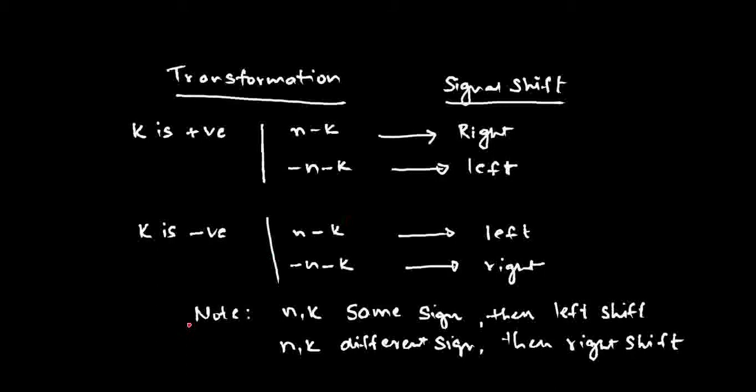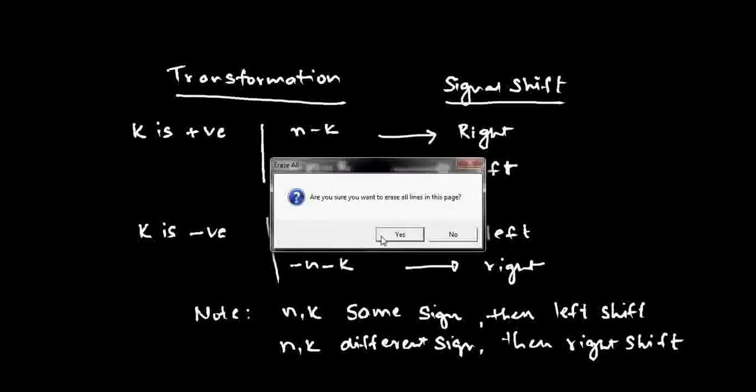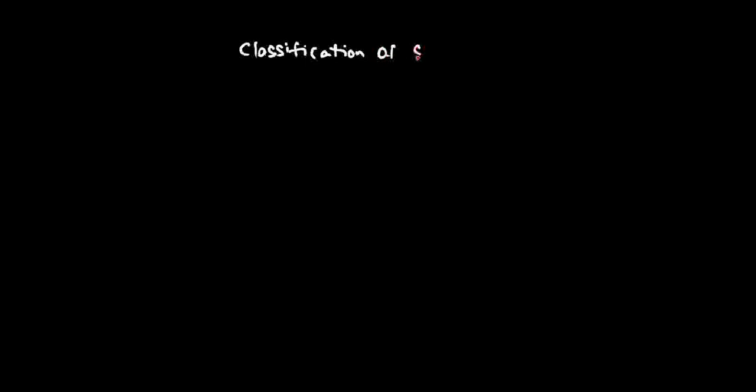We will take some examples later. Now let us look at the classification of systems. So far we have classified signals; now we will look at the classification of systems.